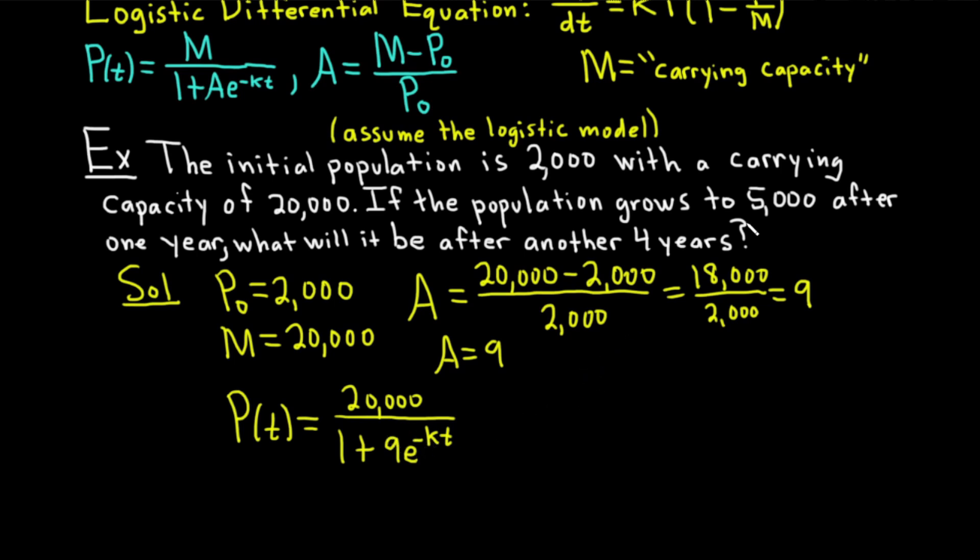To find k, we're going to use the next sentence. It says the population grows to 5,000 after one year, so we're going to use that to find k. Basically, if we plug in t equals 1, this whole thing should equal 5,000. So P(1) equals 20,000 over (1 plus 9e to the negative k), and that should equal 5,000.